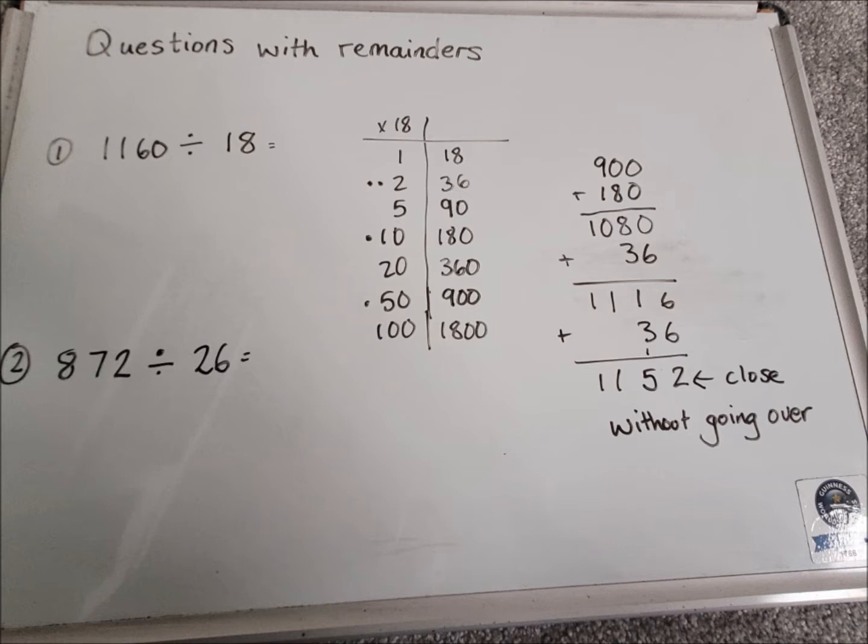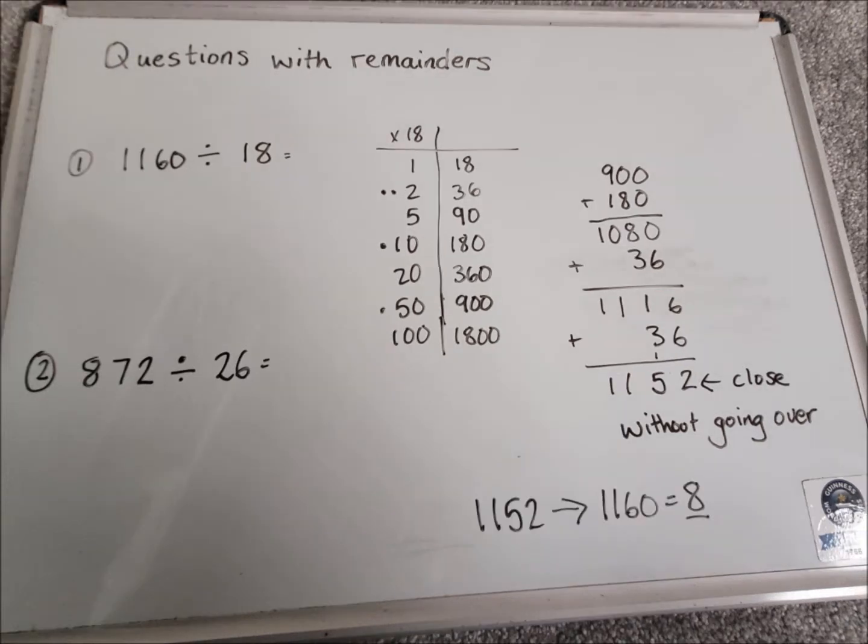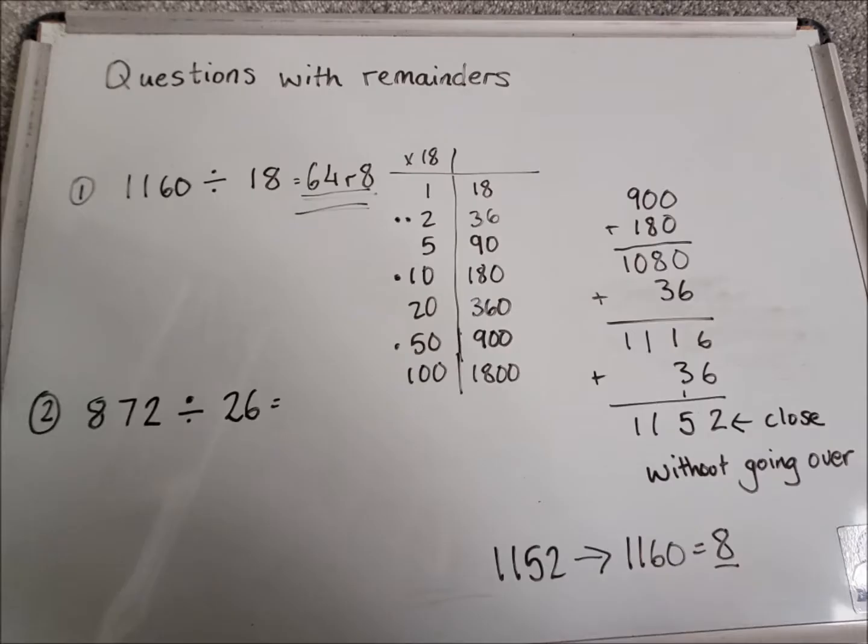So I've now got the number 1152. I need to work out what the difference is between that number and 1160. So I realize that the remainder is going to be 8. Counting up the dots that I've used at the side, I used the 50, the 10 and two 2s. So adding those all together, I get 64 and then remainder 8 from earlier.